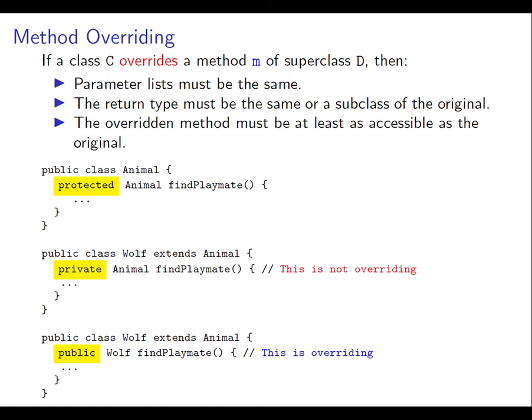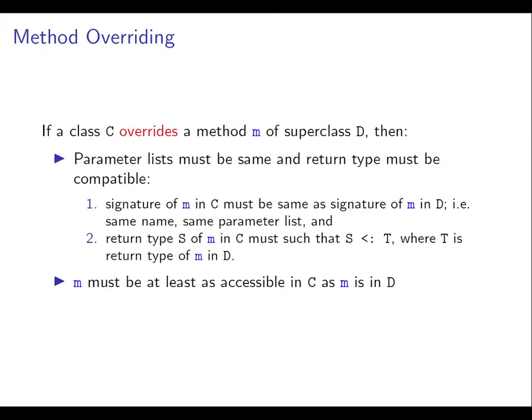And finally, the overridden method must be at least as accessible as the original. So you can't override a method and simultaneously make it more private than it was to start with.